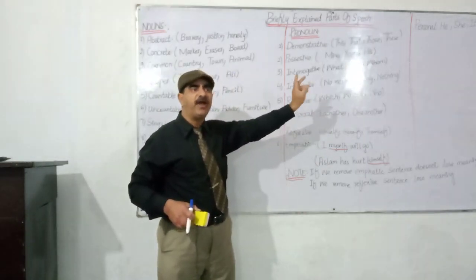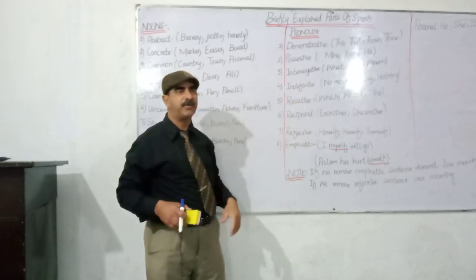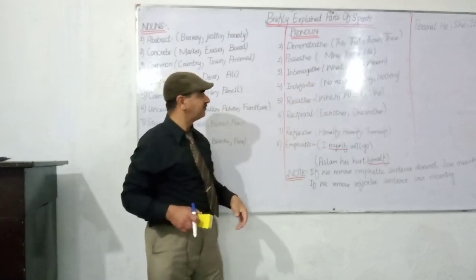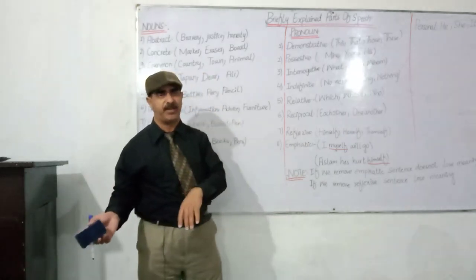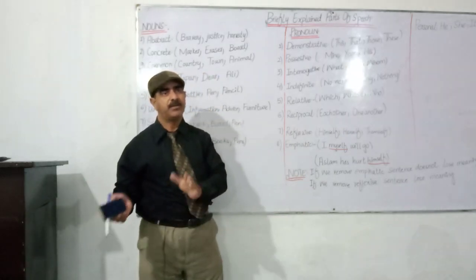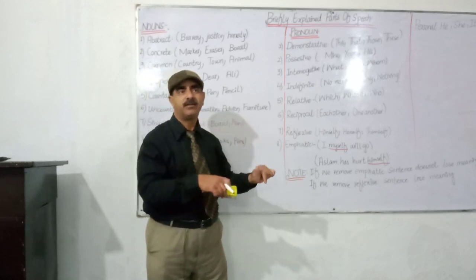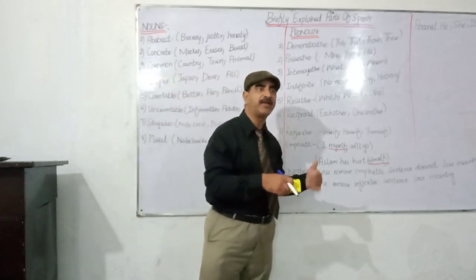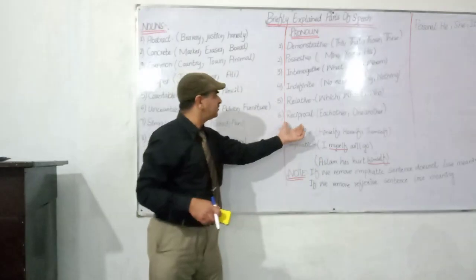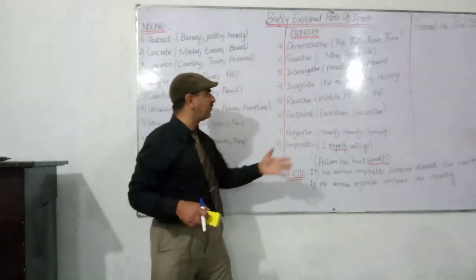For example: 'This is the man who stole my pen.' Here, 'who' is a relative pronoun defining 'the man' and telling us what he did. Next are reciprocal pronouns — each other, and one another.